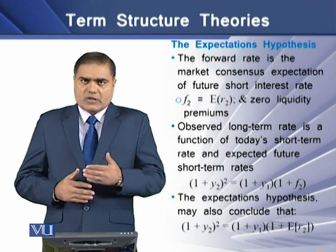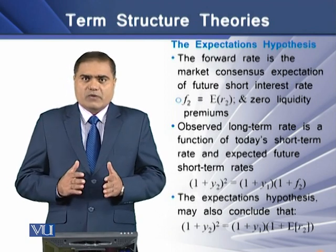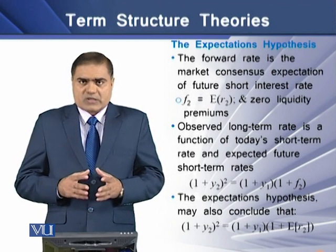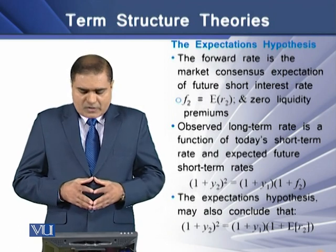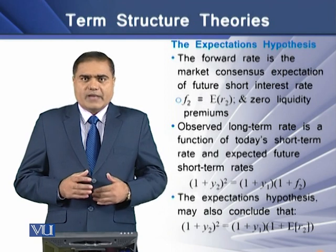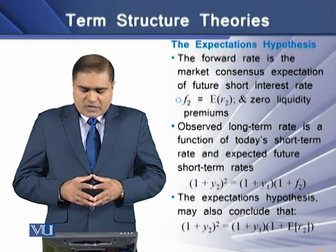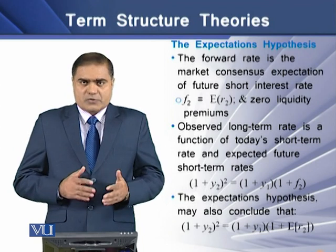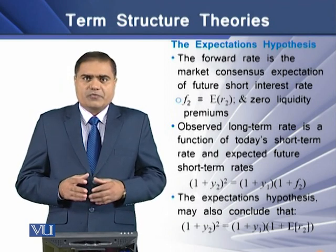If we express this in equation form, we will see that (1 + y2)^2 = (1 + y1) × (1 + f2), where f2 is the forward rate and y2 is the yield at maturity at the end of year 2. The expectation hypothesis may also conclude that (1 + y2)^2 = (1 + y1) × (1 + expected return at the end of year 2).